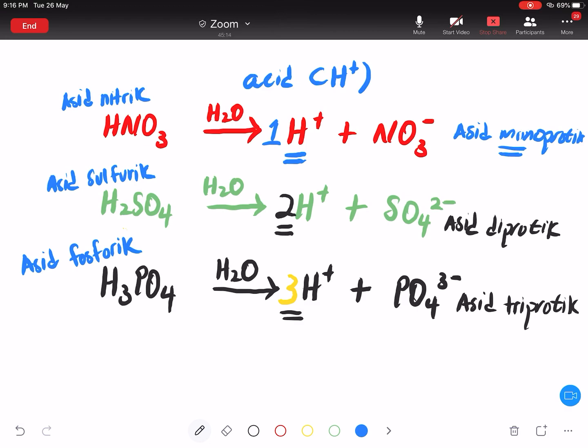Okay. Guys. Saya ada satu lagi acid. Yang ni adalah CH3COOH. Ini dipanggil sebagai ethanoic acid. Ethanoic acid. Apa itu ethanoic acid? Dia juga dalam bahasa Melayu dikenali sebagai cuka. Dia juga dikenali sebagai cuka. Guys. I dissolve this thing in the water. Jawapan dia apa? Guys.